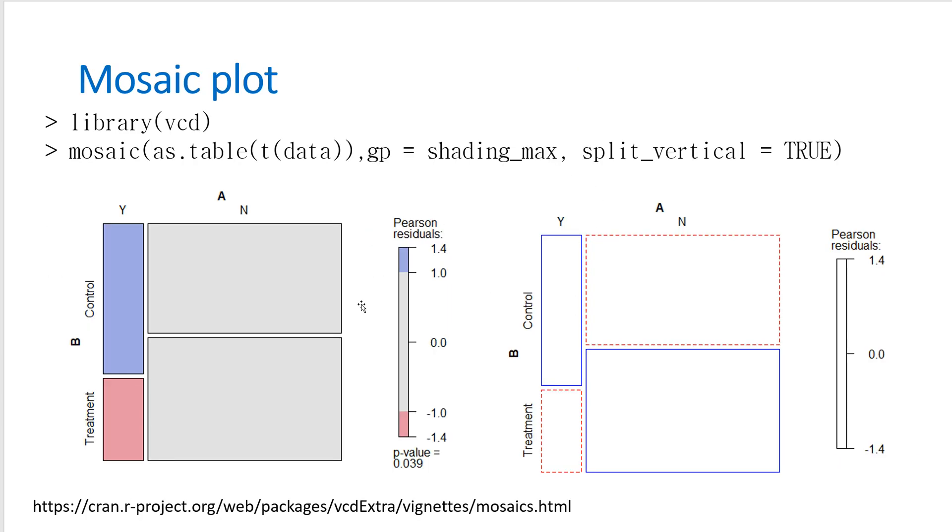And also we can think of graphical expression. So once you activate VCD library, you can use mosaic function, then you can draw this kind of contingency table graph.